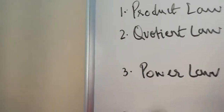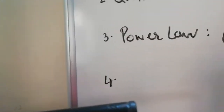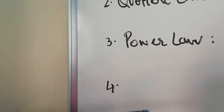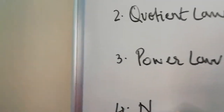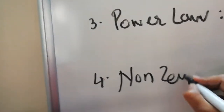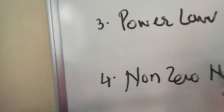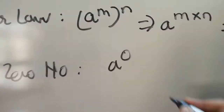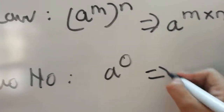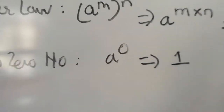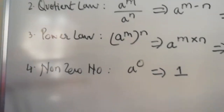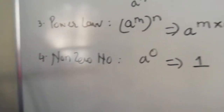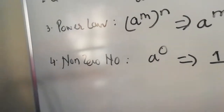The fourth law — drill this thing in your mind. For any non-zero number, if it is a raised to 0, then your answer will always be 1. Any base raised to 0 will always equal 1.